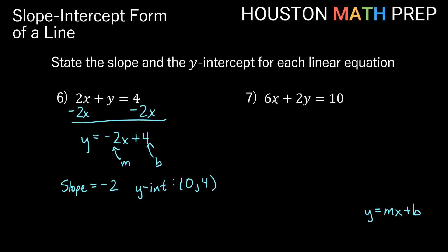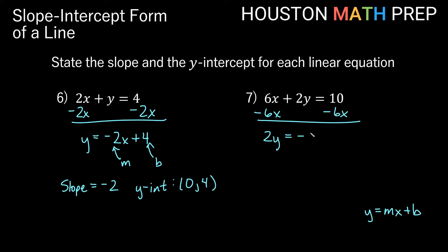For number 7, 6x plus 2y equals 10. Again, not solved for y, so we need to get it into y equals form. We get rid of the x term on the left by subtracting, putting that x term on the other side. That gives us 2y equals negative 6x plus 10.